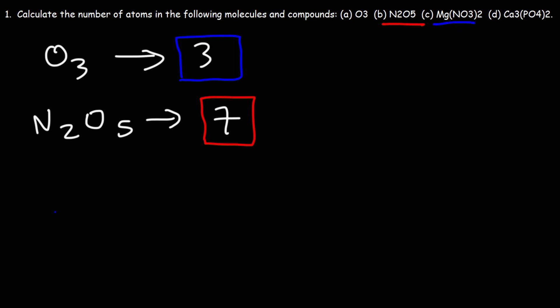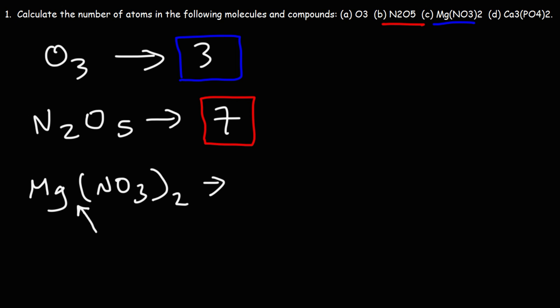Next, we have magnesium nitrate, MgNO3. How many atoms are present here? Notice that there's no number in front of Mg. If there's no number, it's always assumed to be a 1. So we have one magnesium atom. Technically, magnesium is an ion in this compound, but let's keep things simple.